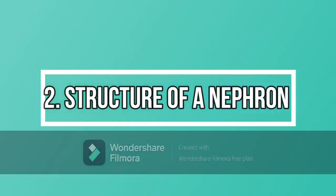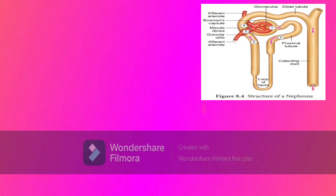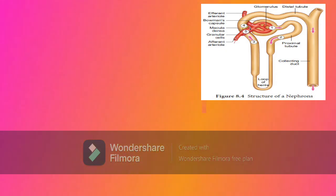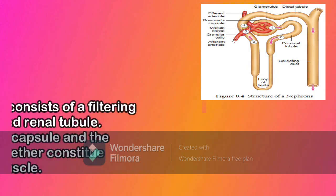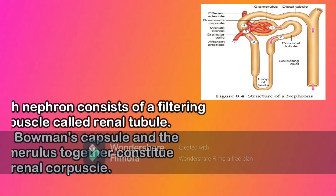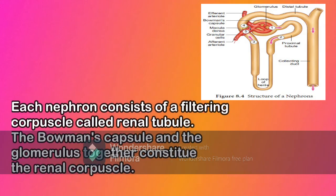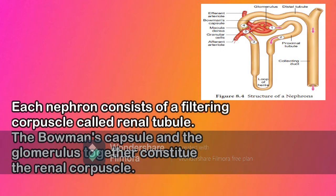Structure of a Nephron. Each kidney has nearly one million complex tubular structures called nephrons. Each nephron consists of a filtering capsule, also called the renal capsule or Malpighian body, and a renal tubule. The renal tubule opens into a longer tubule called the collecting duct. The renal tubule begins with a double-walled cup-shaped structure called Bowman's capsule, which encloses a ball of capillaries that delivers fluid to the tubules, called the glomerulus.